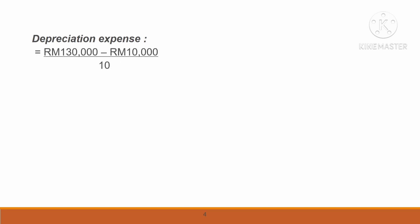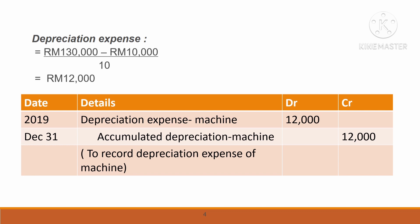Now, how to calculate depreciation? The formula is: cost RM$130,000 less residual value, divided by useful life. You will get RM$12,000. At the end of the accounting period, you prepare the adjusted journal entry: debit depreciation and credit accumulated depreciation RM$12,000.